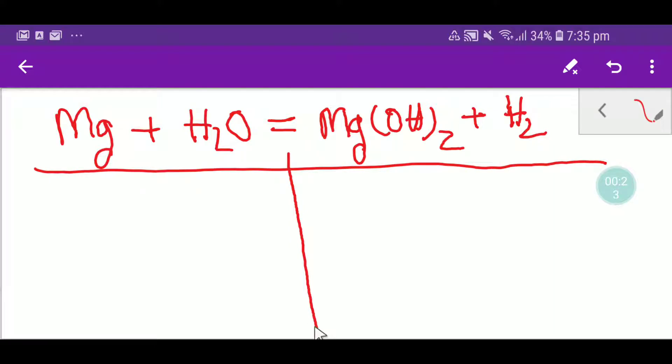Now I will calculate the number of atoms from both sides. So here we have one magnesium, and here we have two hydrogen. So let me write that, two hydrogen, and here we have one oxygen.